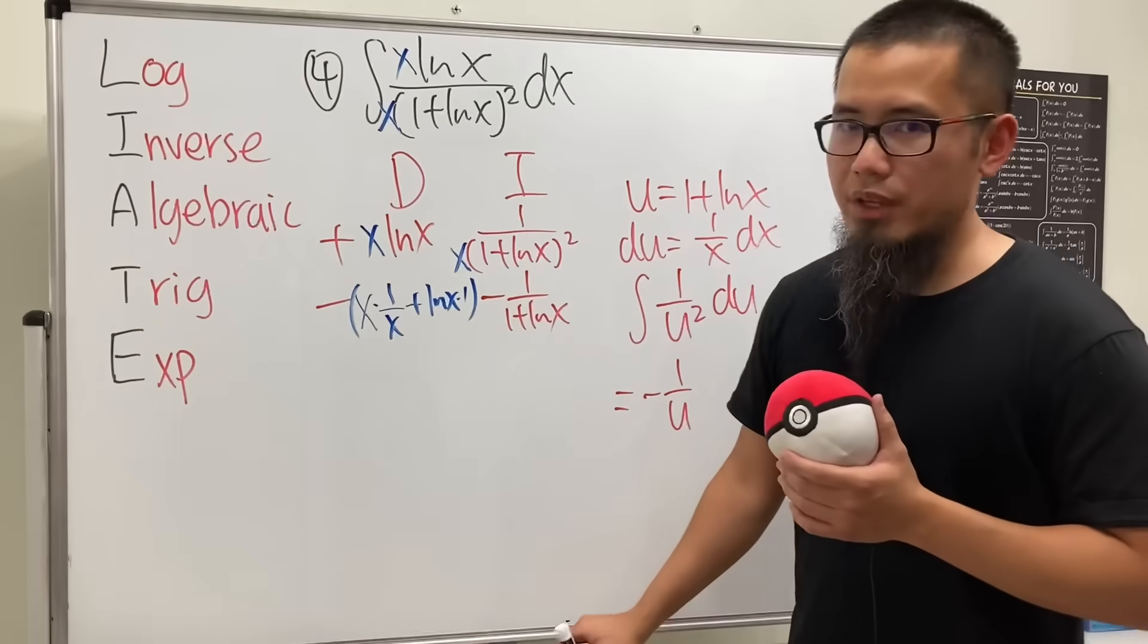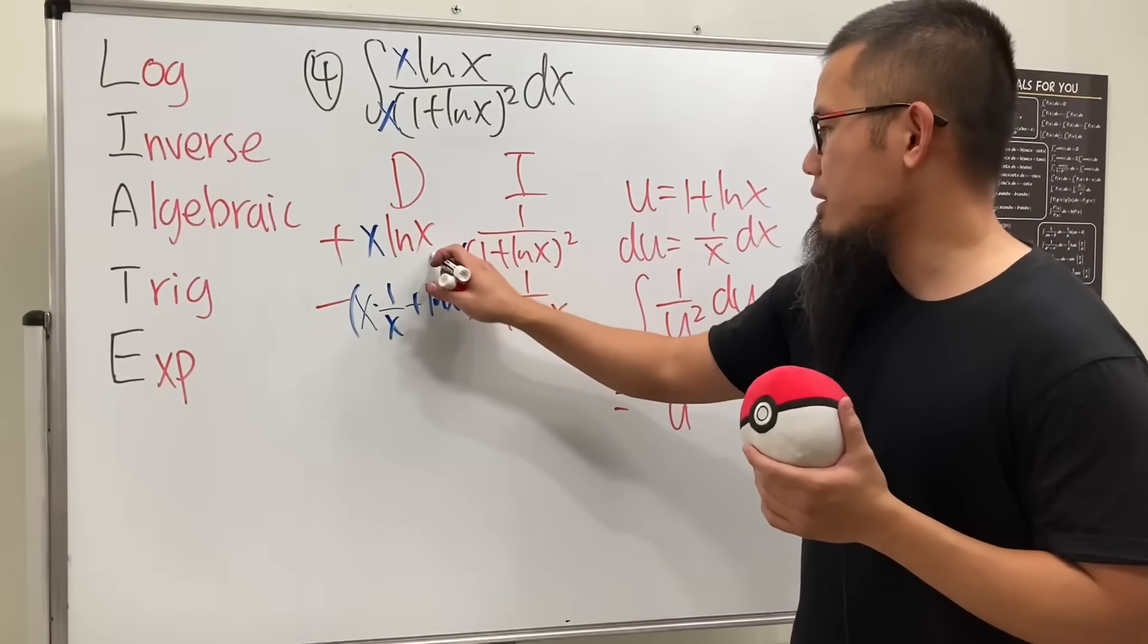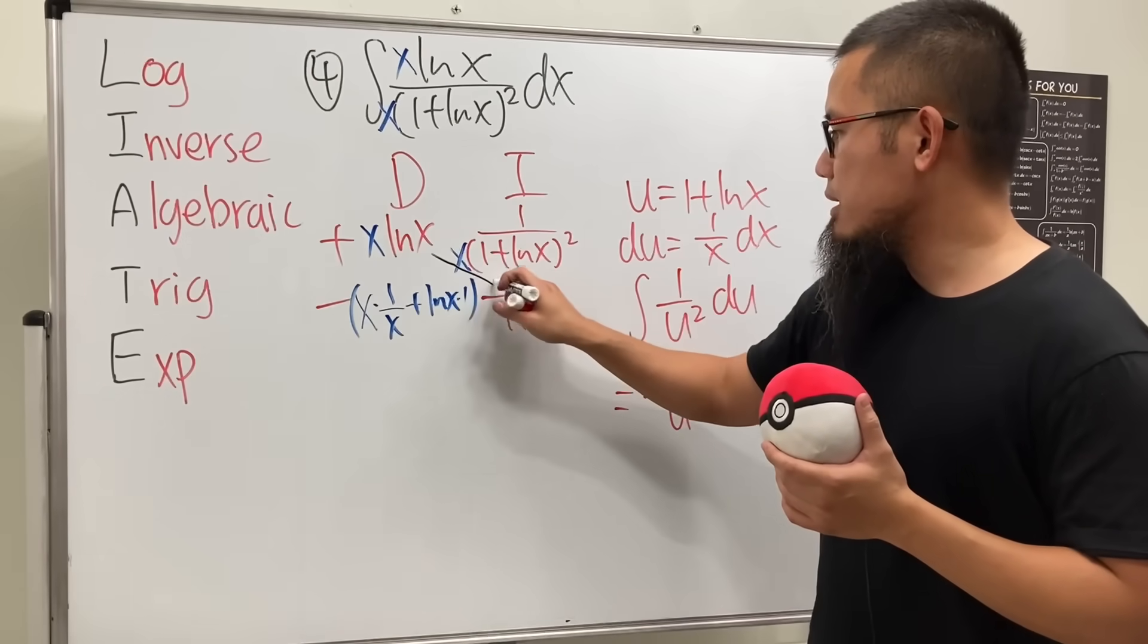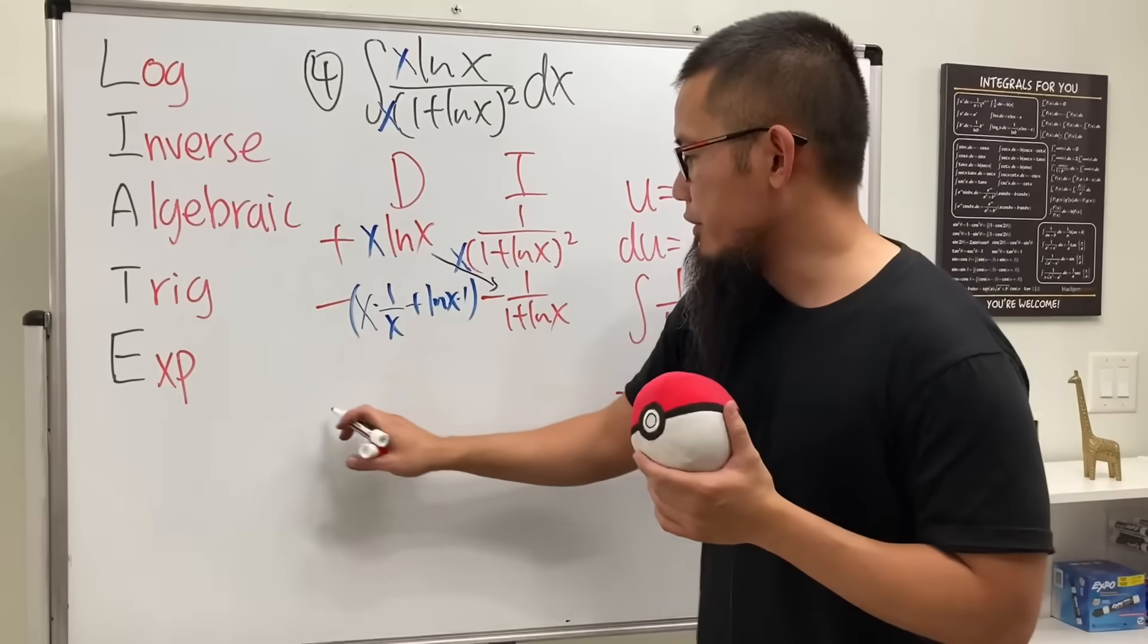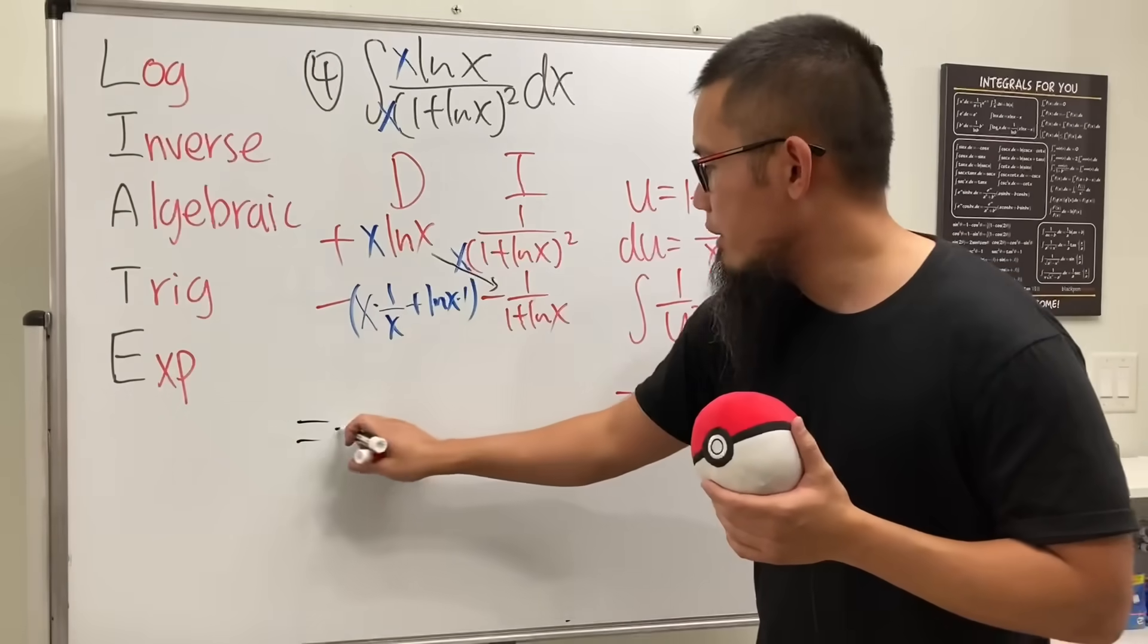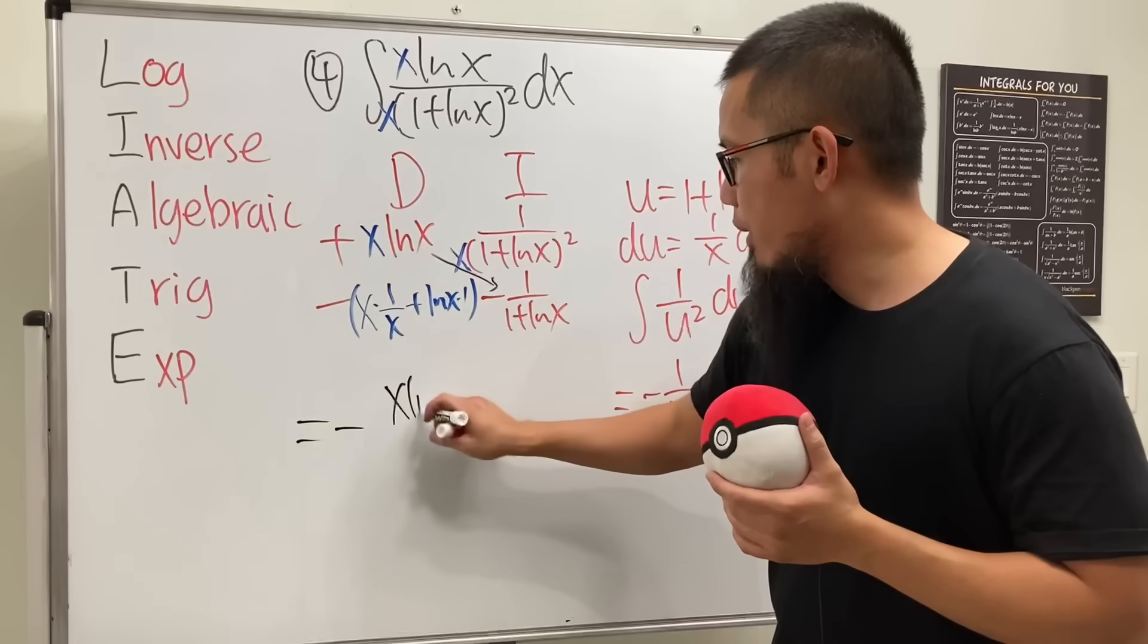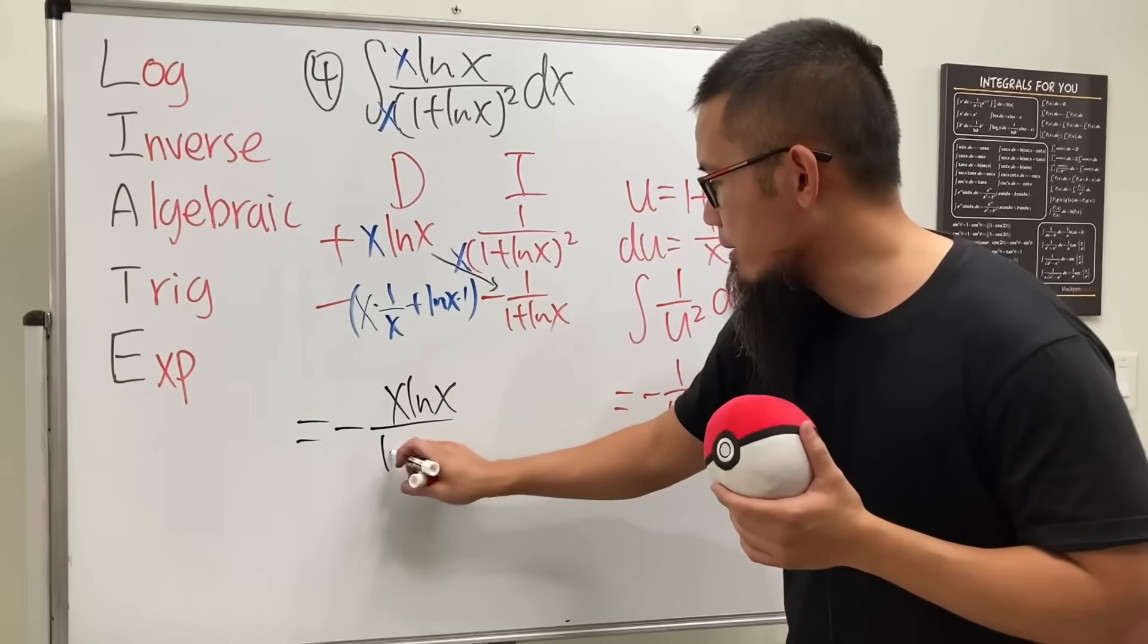And now, let's construct our answer like the good old way, right? So we do this times this. That will give us the first part of the answer. So we have negative and we have x ln x over that on the bottom.